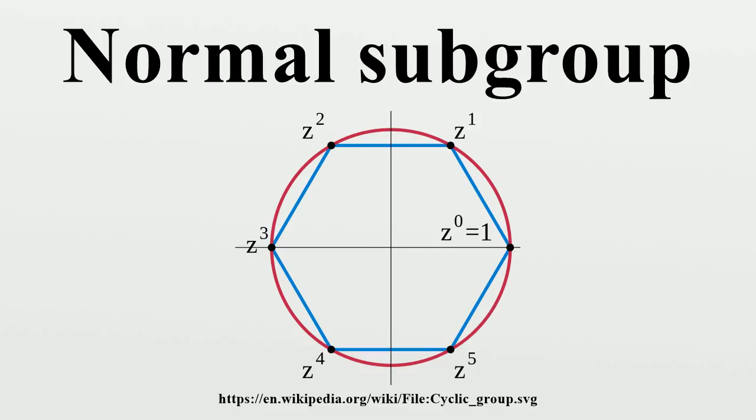The center of a group is a normal subgroup. The commutator subgroup is a normal subgroup. More generally, any characteristic subgroup is normal, since conjugation is always an automorphism.